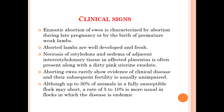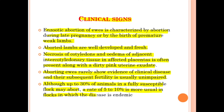Regarding clinical signs, enzootic abortion of the ewes is characterized by abortion during late pregnancy or by the birth of premature, weak lambs. The aborted lambs are well developed and fresh. Necrosis of the cotyledons and oedema of the adjacent intercotyledonary tissues in the affected placenta is often present along with a dirty pink uterine exudate. Aborting ewes rarely show evidence of clinical disease and their subsequent fertility is usually unimpaired. Although up to 30% of animals in a fully susceptible flock may abort, a rate of 5–10% is more usual in flocks where the disease is endemic.